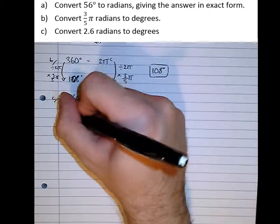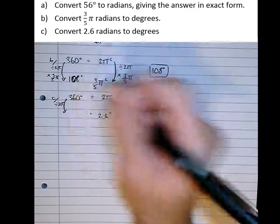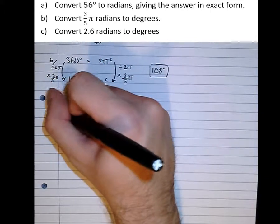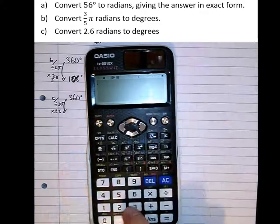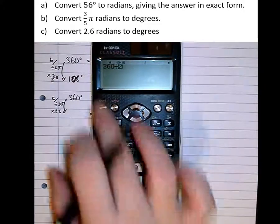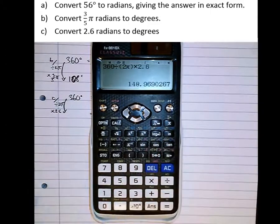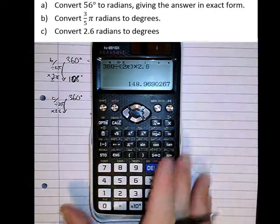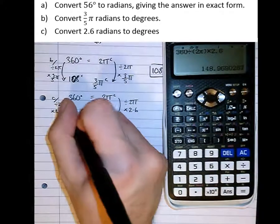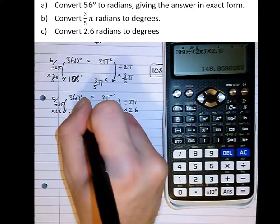Do exactly the same thing to the other side, divide by 2π, times by 2.6, so 360 divided by 2π times 2.6 equals 148.969 etc. To 3 significant figures, that's 149 degrees.